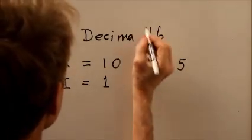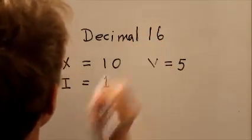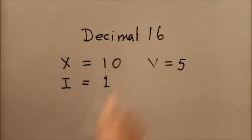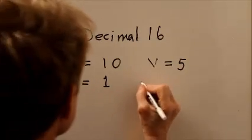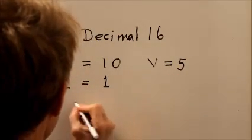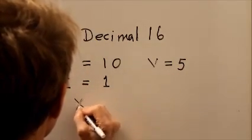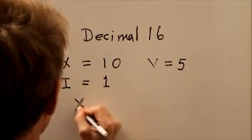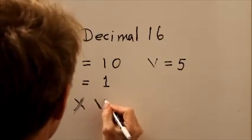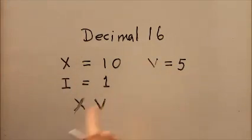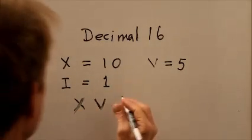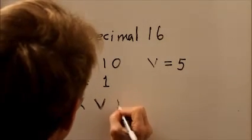Decimal 16 equals 10 plus 5 plus 1. So in Roman numerals we get X, 10 plus 5 plus 1, XVI.